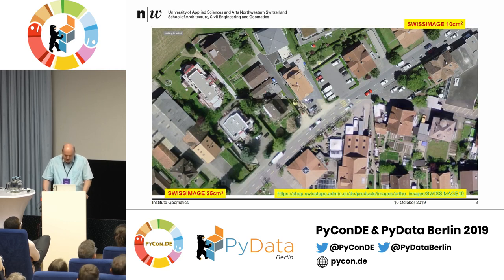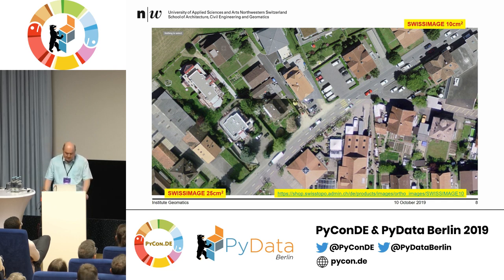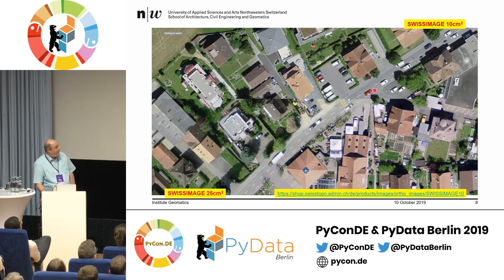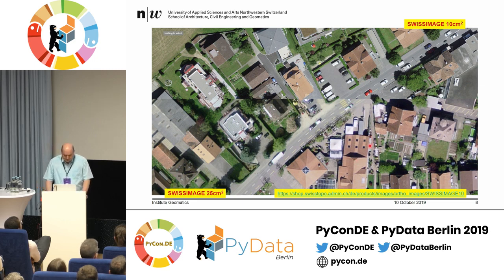The Swiss image dataset from SwissTopo just switched to 10 cm per pixel resolution. Above is the 10 cm resolution and the old one is 25 cm. In 2020, for the first time, all of Switzerland will be in 10 cm resolution. And if I ask again, where are the solar panels — it's not easy. You have to really look and detect.